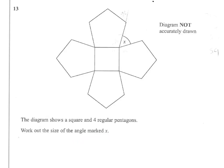What we need to do here is concentrate on the angles around one of the points. We know that this is going to be 90 because it's a square, and we'll call the two missing angles here Y. Y is the internal angle of the regular pentagon.